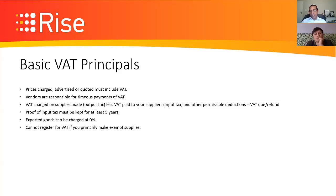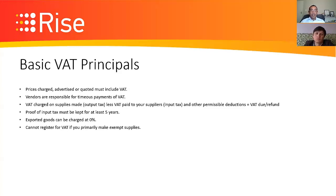You cannot register for VAT if you primarily make exempt supplies. Examples include passenger transport, residential property letting (not commercial), and certain foodstuffs like maize. If any of these exempt supplies is your primary source of income, you cannot register for VAT.